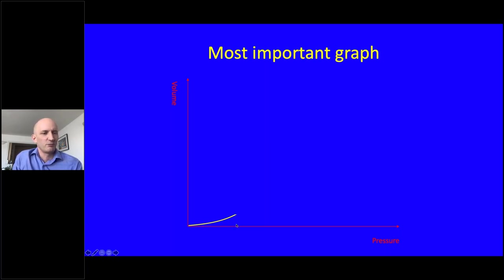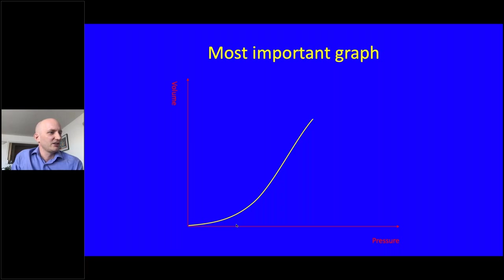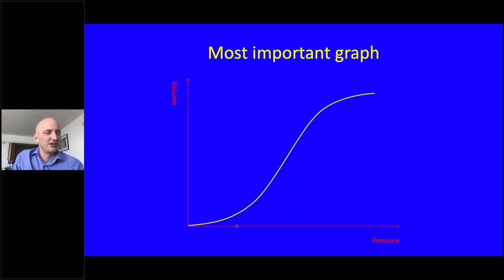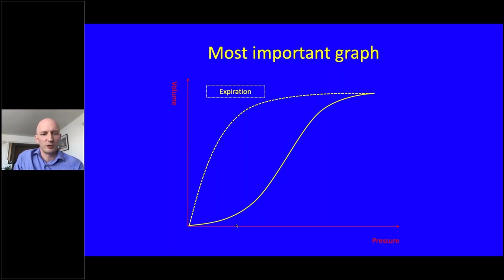After slightly expanding the alveoli, you can apply a linear pressure resulting in a much larger change in volume — this is the ideal portion through which to ventilate. If you continue applying pressure at the top of the curve, a lot of pressure yields very modest volume increase: this is where lungs become over-expanded, causing damage again. Expiration is a much simpler process with more straightforward volume changes, and less dependent on what we can do with our ventilators.